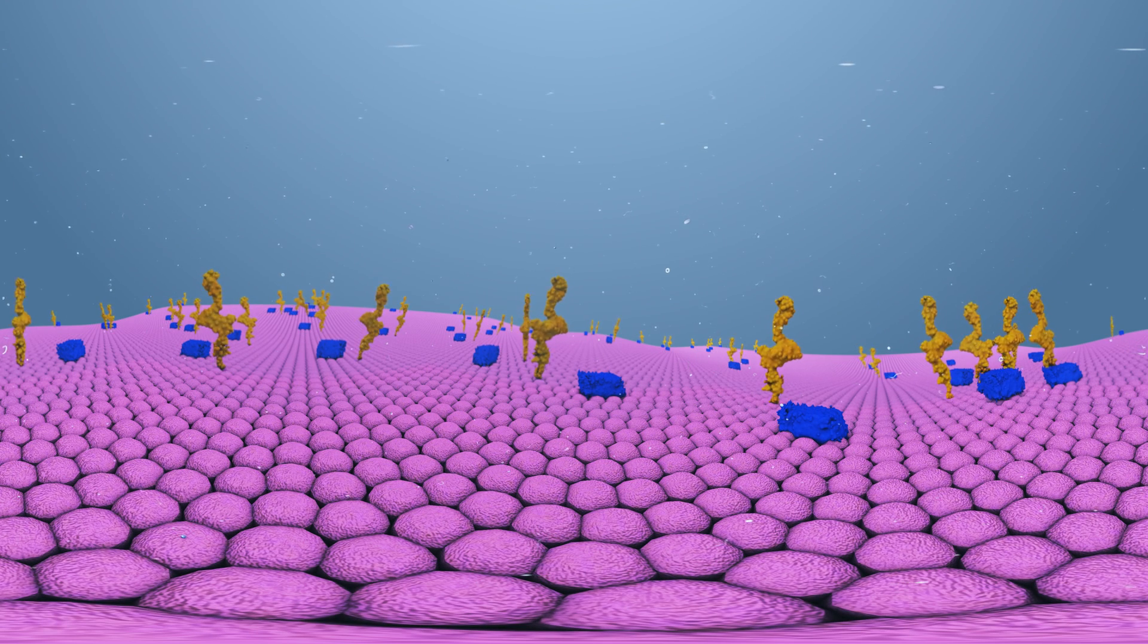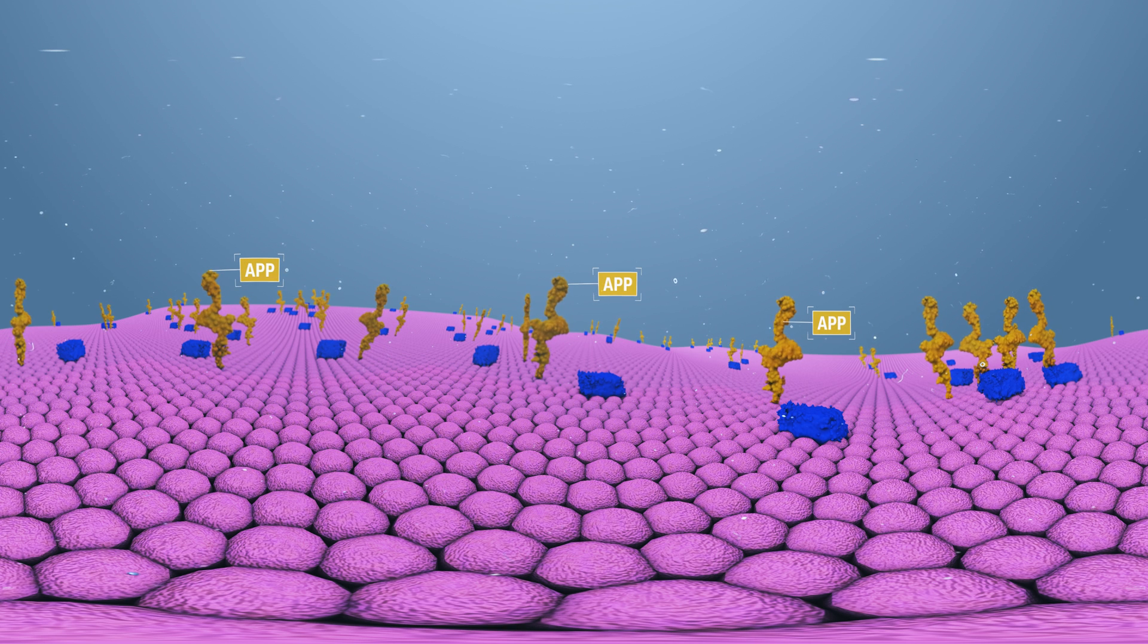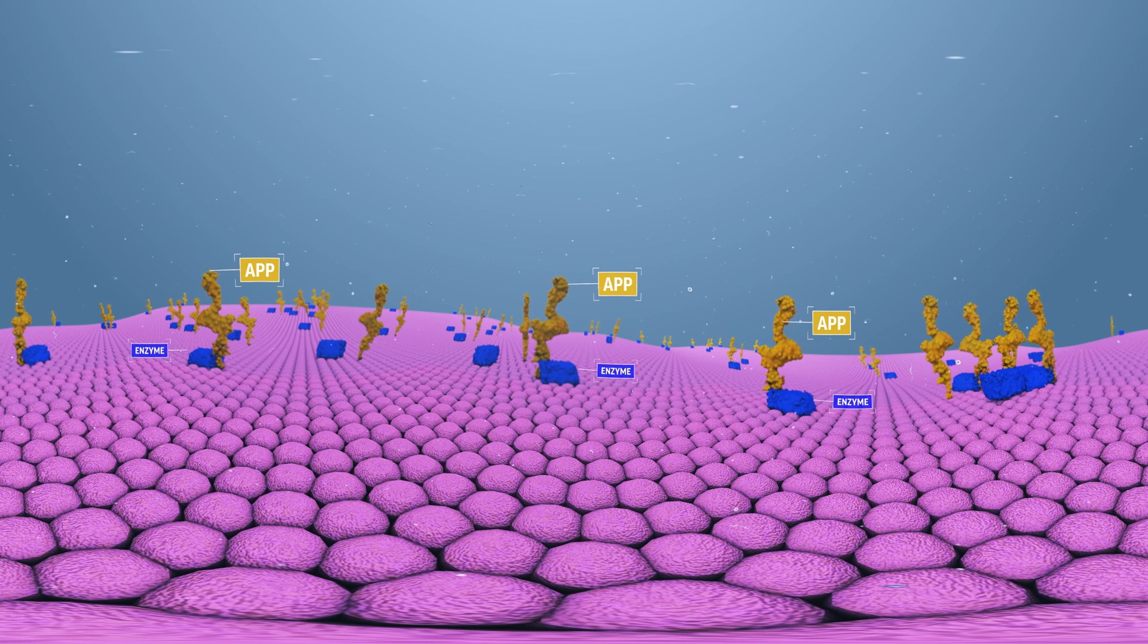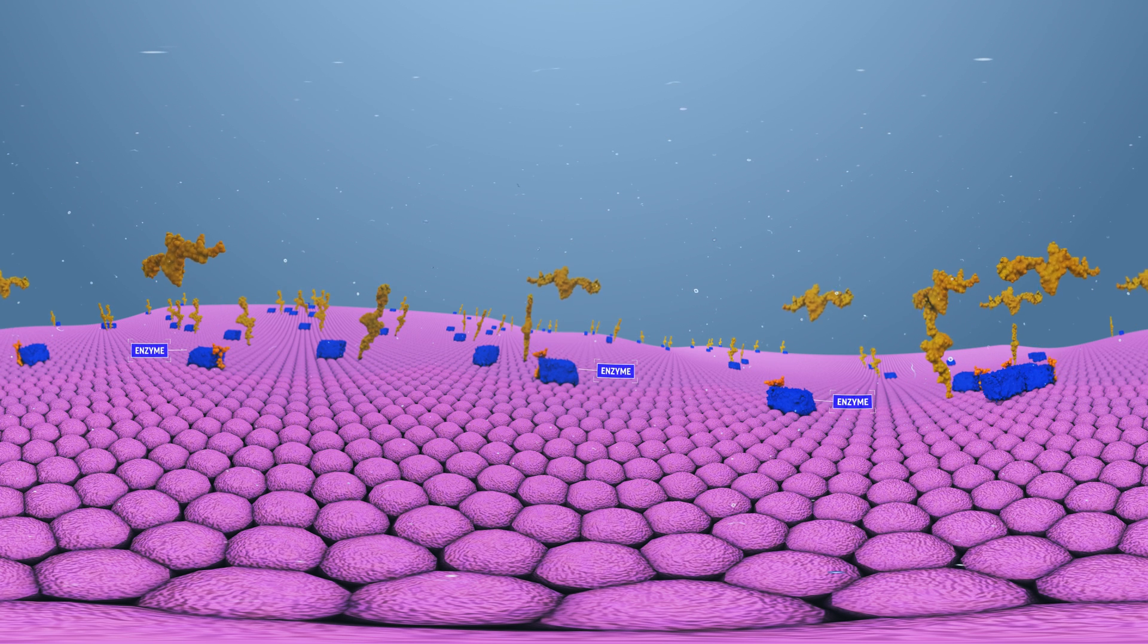The plaque story starts at the surface of neurons with a large protein called APP, the yellow figure shown here sitting in the cell's covering membrane. Enzymes, seen in blue, normally cut APP so it can be cleared away.